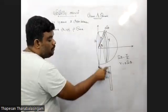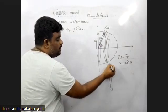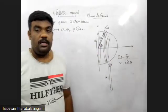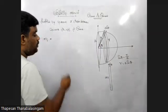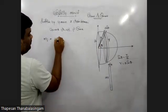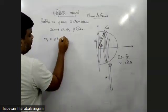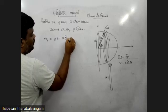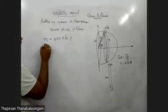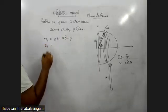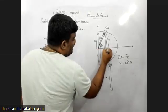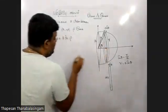2 pi r into a delta. 2 pi r into a delta, into rho. So, a cos.